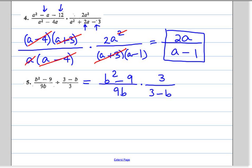Some people remember that by saying keep change flip. You keep the first fraction, you change the division to multiplication, and you flip the second fraction. Now we're going to do the same thing as in number four, we're going to factor and reduce if possible.